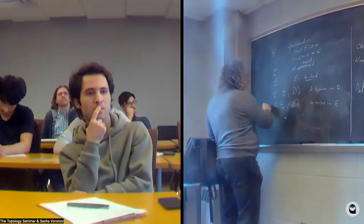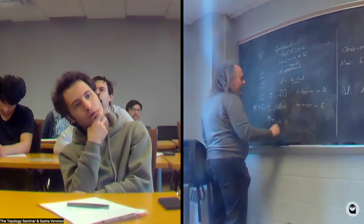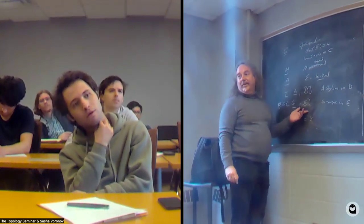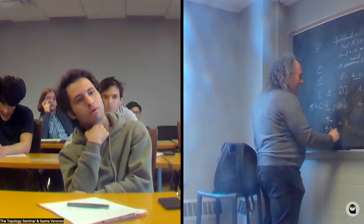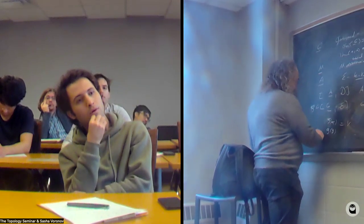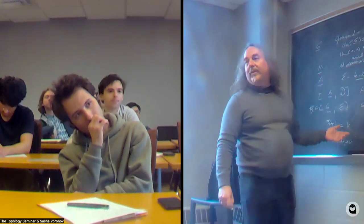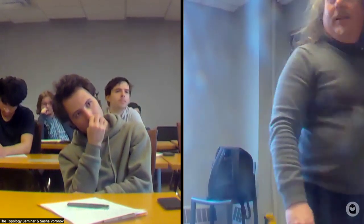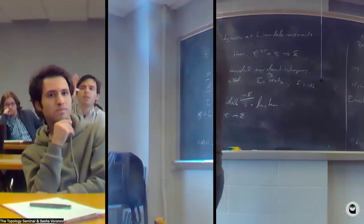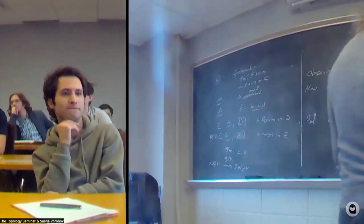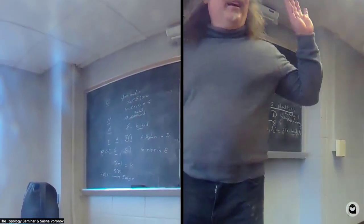If I have a functor rho, then rho(*) is V — for instance, if E is K-vector spaces, that's my object. And then rho(g) is a morphism, which has to be a map from rho(*) to rho(*), which is just V; but it's a map from V to V, and if it's invertible, then it's in Aut(V). So this is how representations are functors.